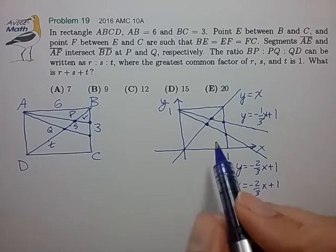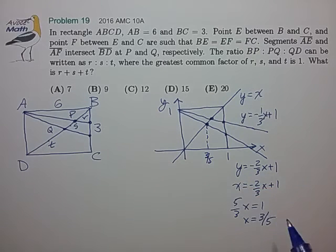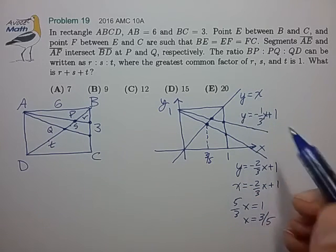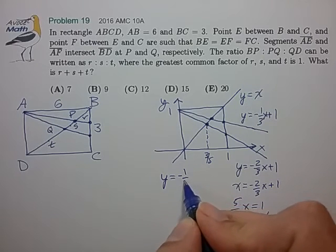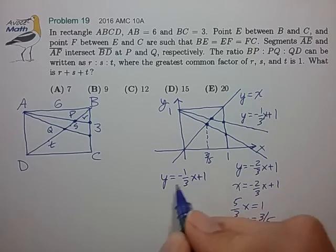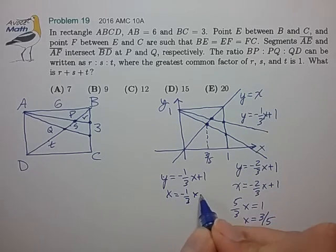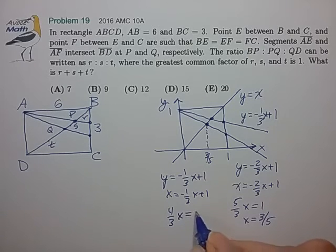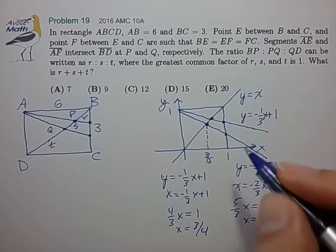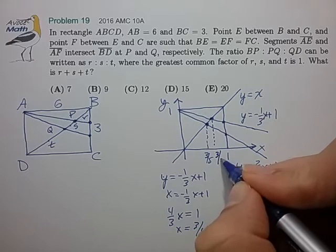So that's this first intersection point is three-fifths. We can do the same thing with this other equation. We have y equals minus one-third x plus one, substitute y equals x, bring it over. So this second intersection point is three-fourths.